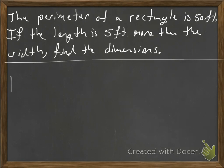We're going to draw ourselves a rectangle. It says the length is 5 feet more than the width, so we can write the length in terms of the width. So the length is 5 more, so add 5 to the width.